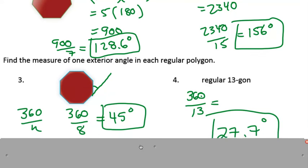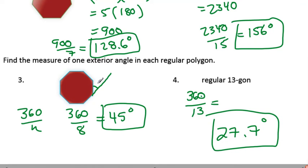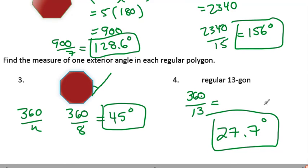Find the measure of one exterior angle. Remember an exterior angle is when you extend an edge and keep going. They all add up to 360. If you extended all these sides out, they would all equal 360. So if you divide by the number of angles, it tells you how many degrees are in one exterior angle. For an octagon with eight sides: 360 divided by eight gives 45. For a 13-gon: divide by 13, you get 27.7 degrees — round to the nearest tenth.